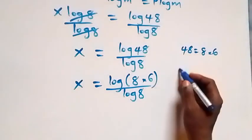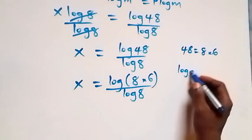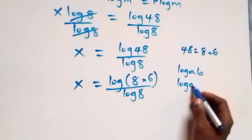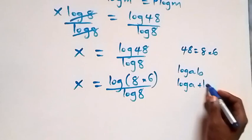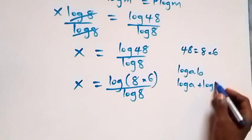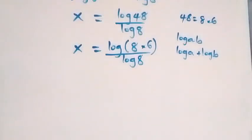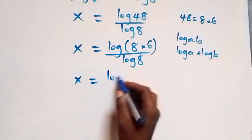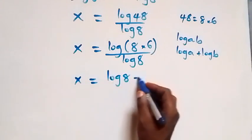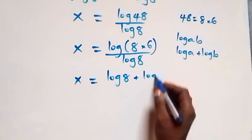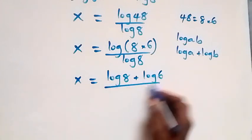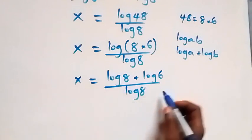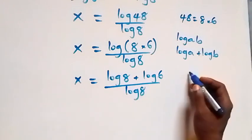From the law of logarithm, log(a times b) is the same as log a plus log b. So what we have becomes x equals log 8 plus log 6 over log 8. We can then separate this into two fractions, since (a + b)/c equals a/c plus b/c.